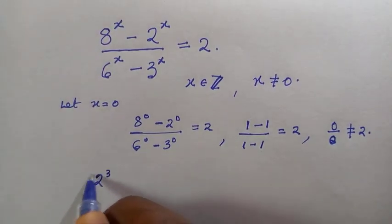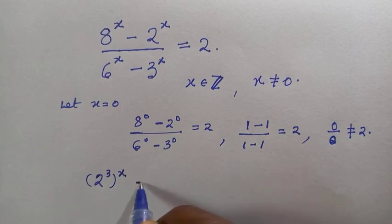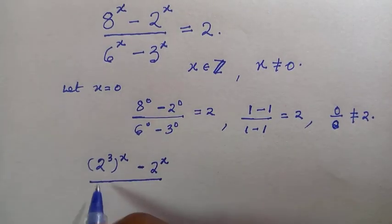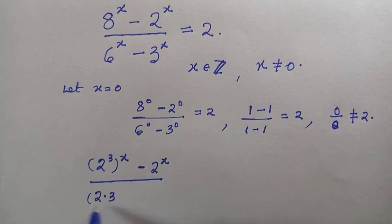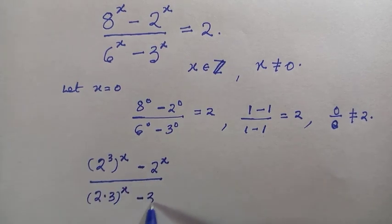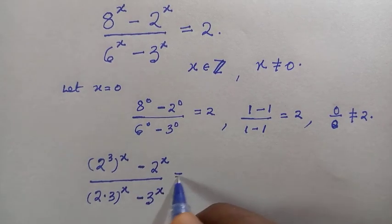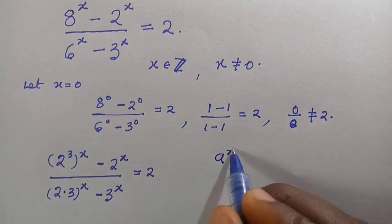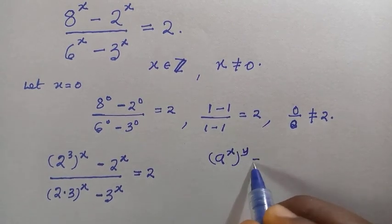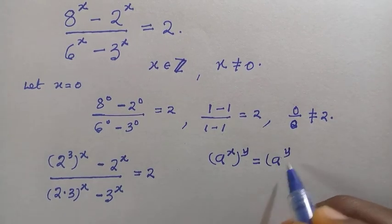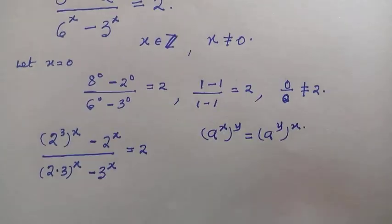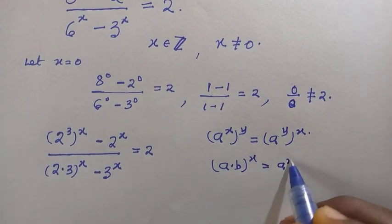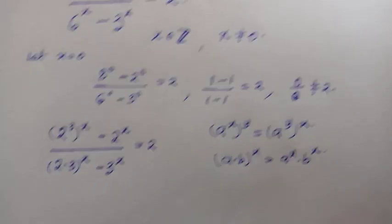From this problem, if I rewrite 8 as 2 to the power of 3, all raised to power x, minus 2 to the power of x, divided by 6x split into 2·3 raised to the power of x, minus 3 raised to the power x, everything equals 2. Recalling rules of indices: a raised to power x raised to power y is the same as a raised to power y raised to power x, and (a·b) raised to power x equals a^x · b^x.